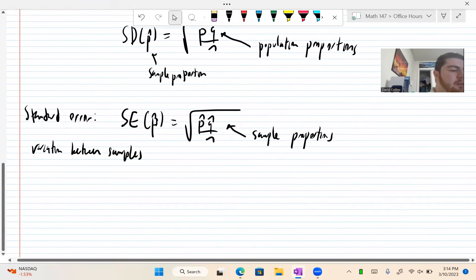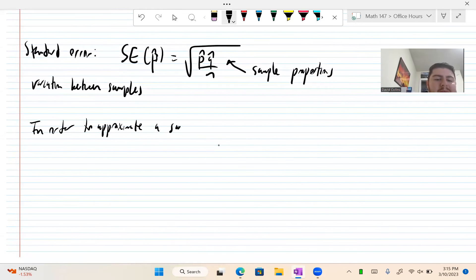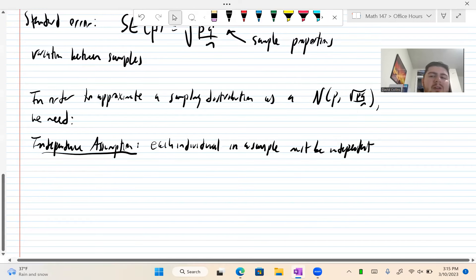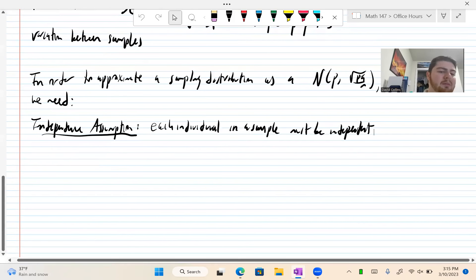So in order to approximate a sampling distribution as a normal P, square root PQ over N, we need the following conditions. First, it is the independence assumption. Each individual in a sample must be independent. We can really chalk this up to a good survey, a good sampling method, like a simple random sample or such.